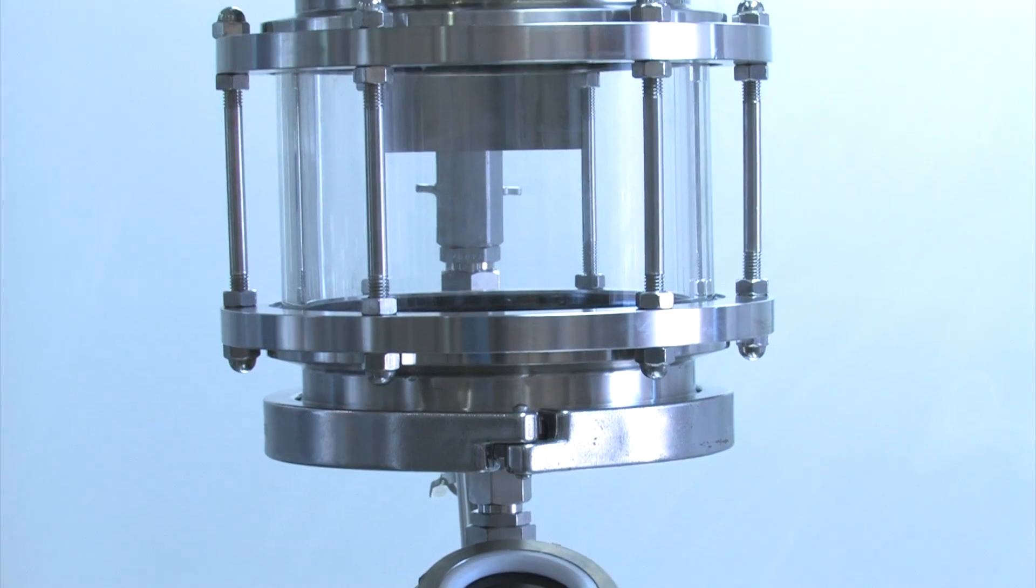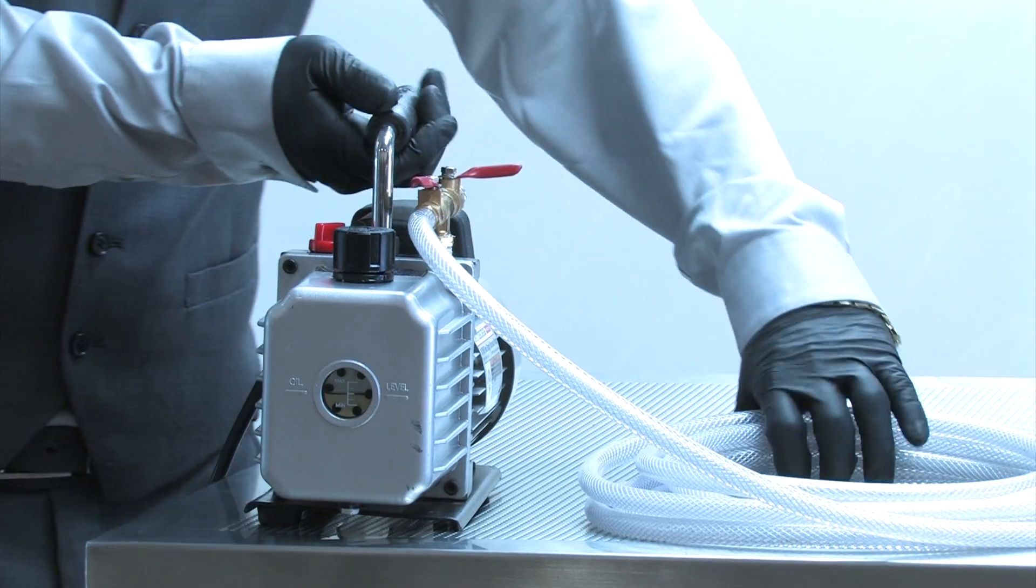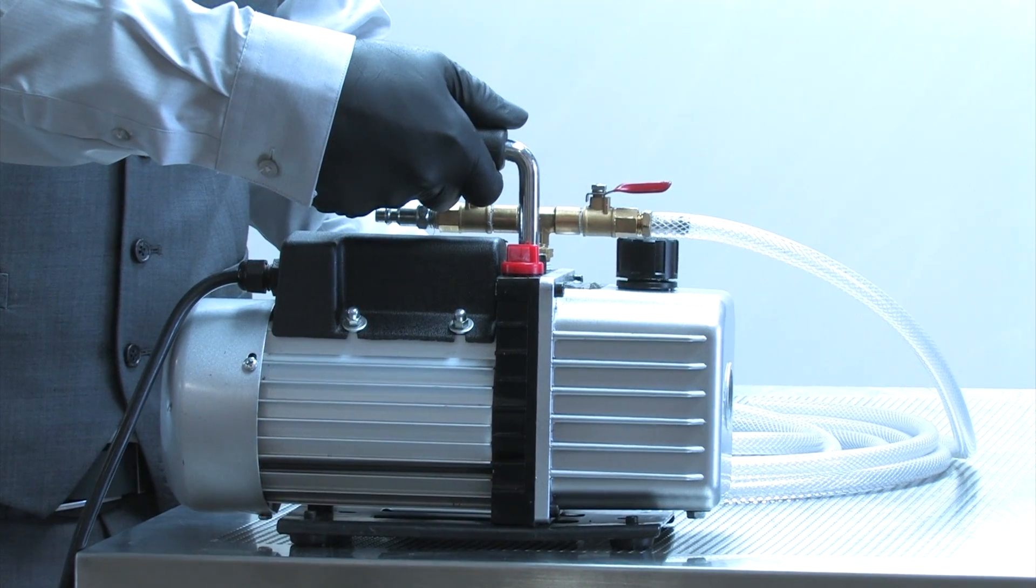In order to fill your Mr. Extractor for the first time, you're going to need to vacuum all the oxygen out of it. This can be accomplished easily by using a simple vacuum pump obtained at your local hardware store.